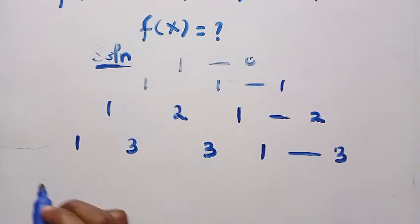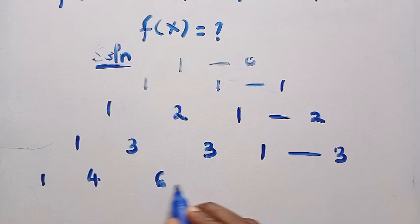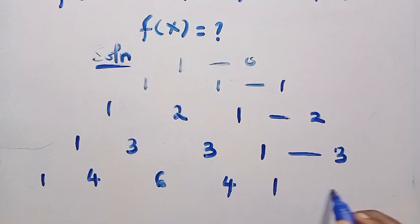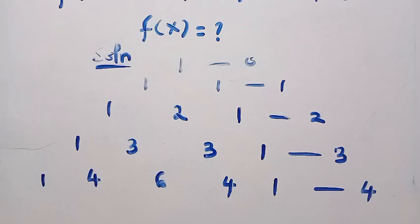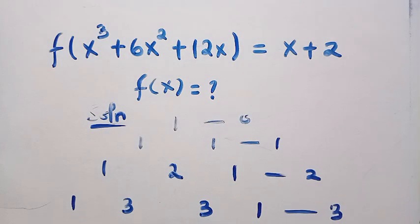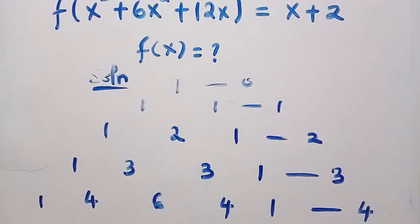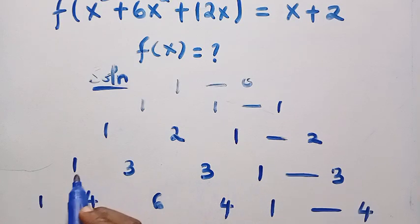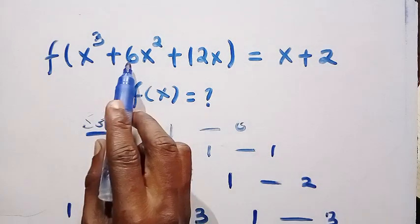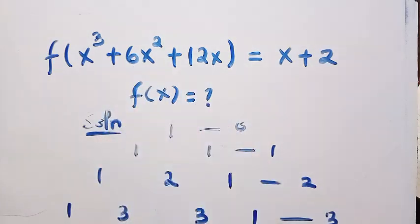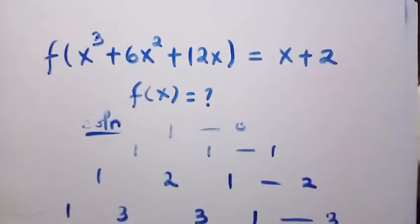And also we have 1, 4, 6, 4, and 1 for when the power is 4. This continues, but we are going to stop here because from the given function the domain has degree 3, which means I've gotten what I want: 1, 3, 3, 1. These are the coefficients of the terms in the expansion.